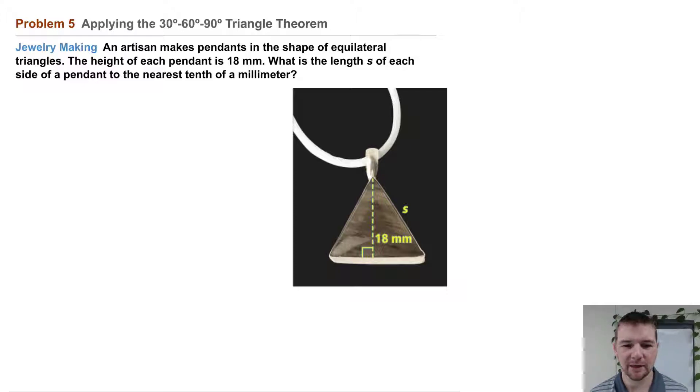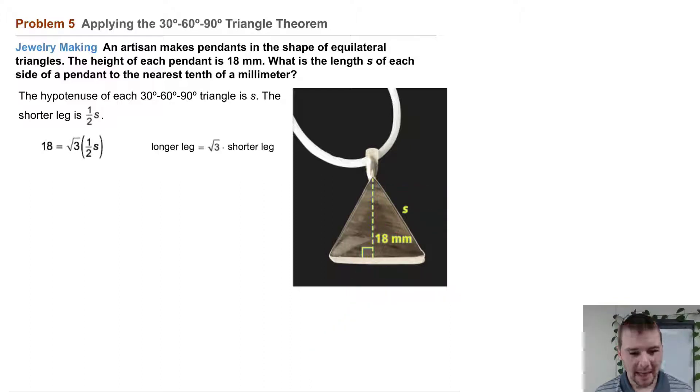The hypotenuse of each 30-60-90 triangle is s. The shorter leg is one-half s. 18 equals the square root of 3 times one-half s. Remember, that's the longer leg equals the square root of 3 times the shorter leg.